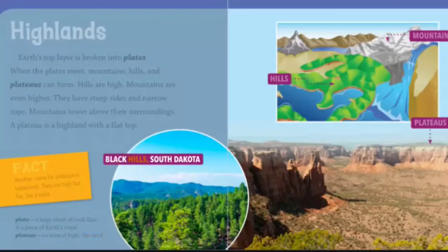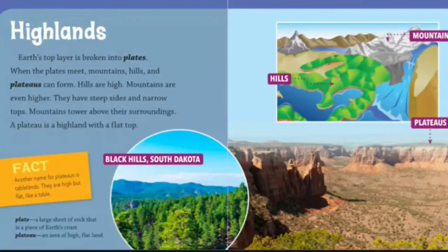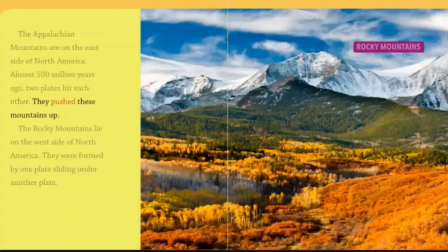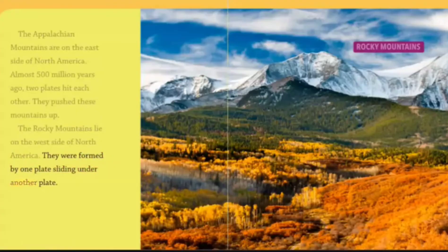Black Hills, South Dakota shows examples of hills, mountains, and plateaus. The Appalachian Mountains are on the east side of North America. Almost five hundred million years ago, two plates hit each other and pushed these mountains up. The Rocky Mountains lie on the west side of North America. They were formed by one plate sliding under another plate.